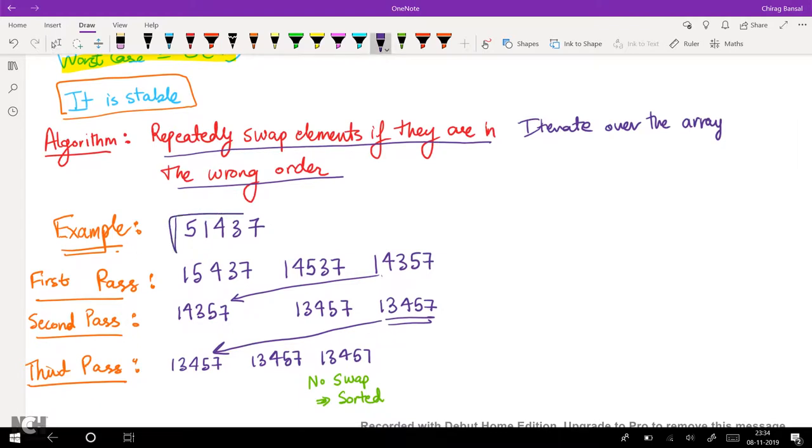So suppose we have this array 5, 1, 4, 3, 7. So in the first pass we first swap 5 and 1. Then we check 5 and 4, then we swap them.